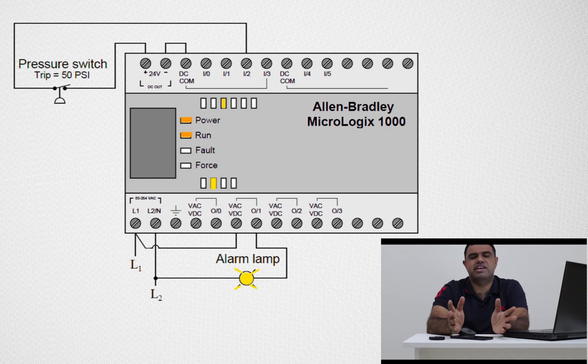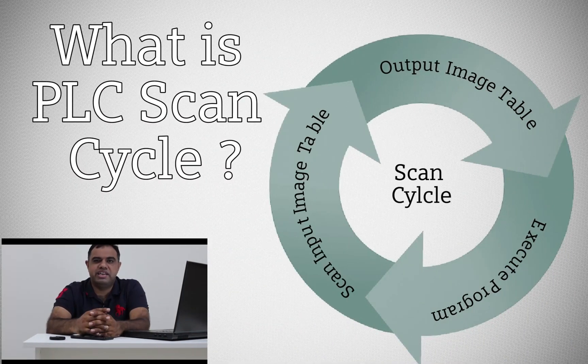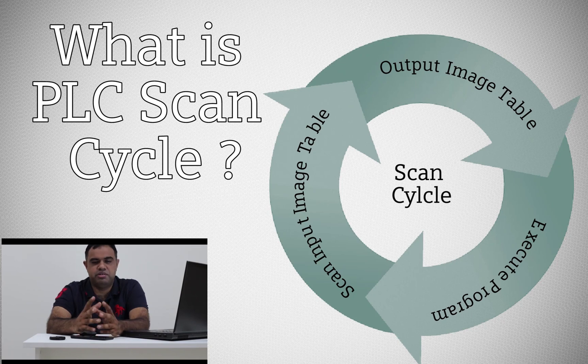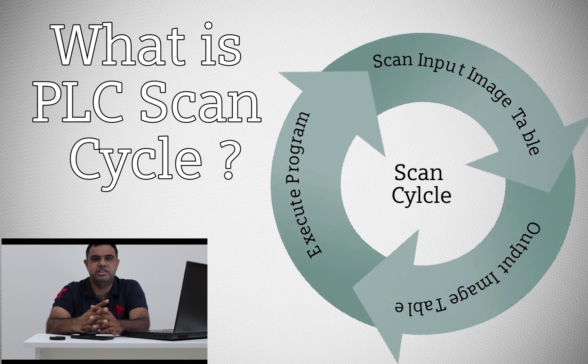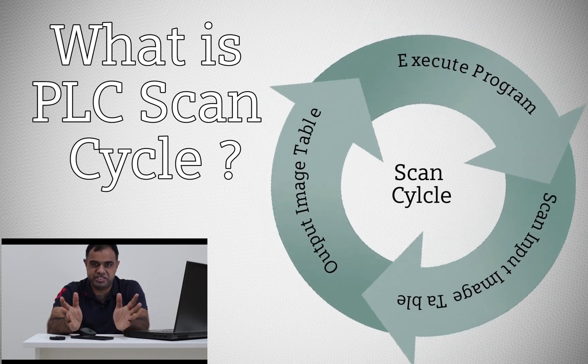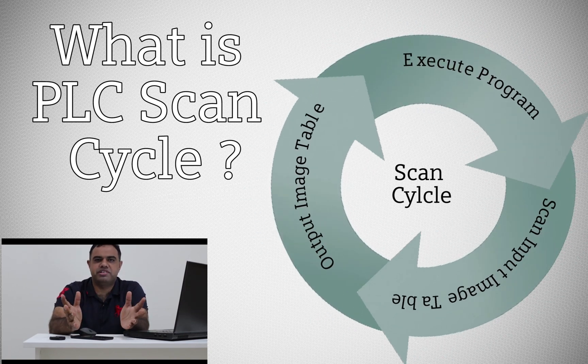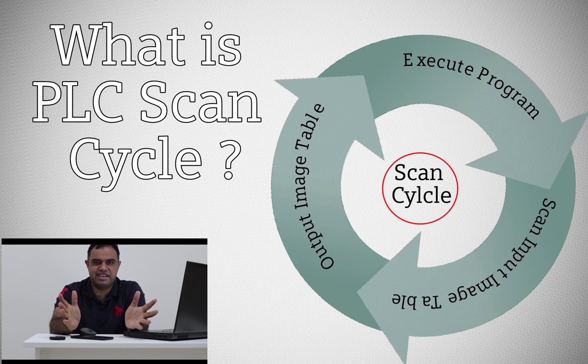The PLC scan sequence consists of three steps: Number one, scan input image data table. Number two, execute program. Number three, update output image table. The time required by the CPU to go through these steps is called PLC scan time.